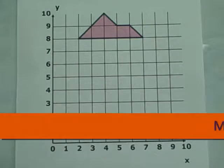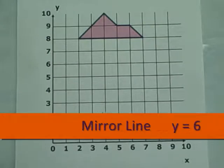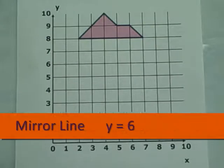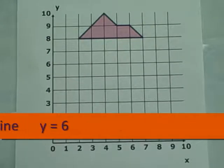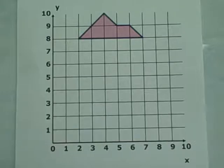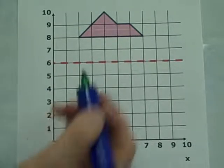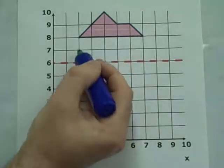The mirror line in this example is y equals 6, which passes through (0,6), (1,6), (2,6) and so on, and is a horizontal line as shown.